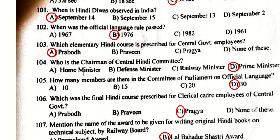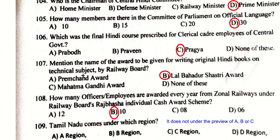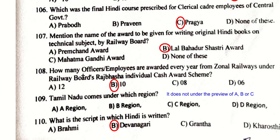Hindi Divas is observed on September 14. The Official Language Rule was passed in 1976. The elementary Hindi course prescribed for central government employees is Prabodh. The chairman of the Central Hindi Committee is the Prime Minister. The Parliamentary Official Committee has 30 members. The final Hindi course prescribed for clerical cadre employees of the central government is Pragya.